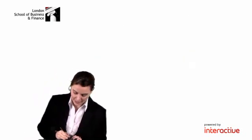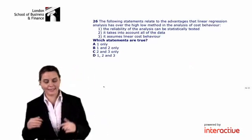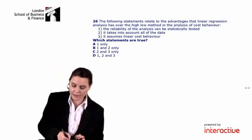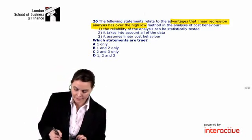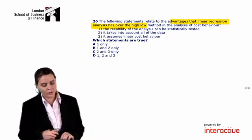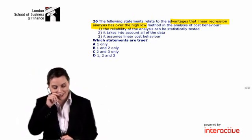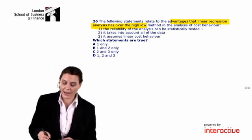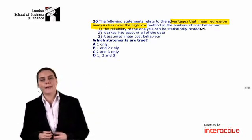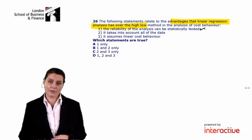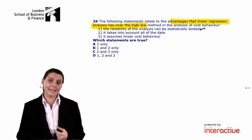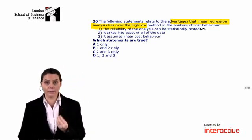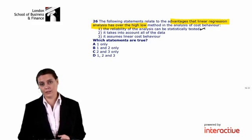So if we have a look back at our statements then, we're looking at the advantages that linear regression has over the high-low method. So first of all, using regression analysis, the reliability of the analysis can be statistically tested. That is true. Remember after we've calculated our line of best fit, we then can calculate our correlation coefficient. And that tells us how reliable our line of best fit is. Number two, regression analysis takes into account all of the data. Yes, it does. We use all of our known data points to calculate that line of best fit.